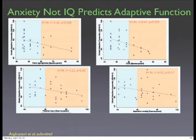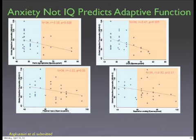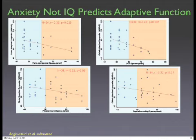Higher adaptive function goes with lower anxiety and vice versa. Interestingly, it's certain kinds of anxieties driving this: OCD-like repetitive behaviors as a way of controlling anxiety, physical injury fears that aren't going away as children get older, and separation anxiety. Social phobia and generalized anxiety disorder are not showing that relationship. So specific kinds of anxieties are controlling adaptive function outcomes.